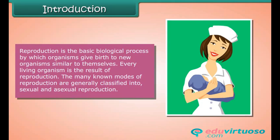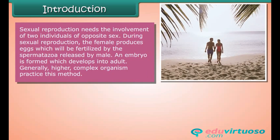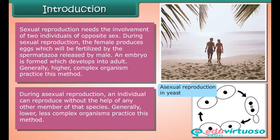Reproduction is the basic biological process by which organisms give birth to new organisms similar to themselves. Every living organism is the result of reproduction. The many known modes of reproduction are generally classified into sexual and asexual reproduction. Sexual reproduction needs the involvement of two individuals of opposite sex; the female produces eggs which will be fertilized by the spermatozoa released by the male. An embryo is formed which develops into an adult. Generally, higher complex organisms practice this method.